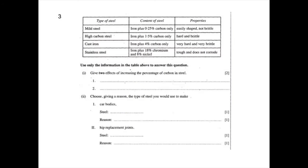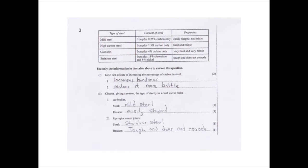For question three, you are asked to use the table to answer questions. Two effects of increasing the percentage of carbon in steel: it increases hardness and it makes steel more brittle. For part two, you would use mild steel for car bodies because it's important that you can shape them and mild steel is easily shaped. For hip replacement joints, you would use stainless steel because it's tough and doesn't corrode or rust.